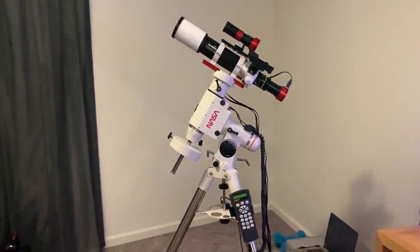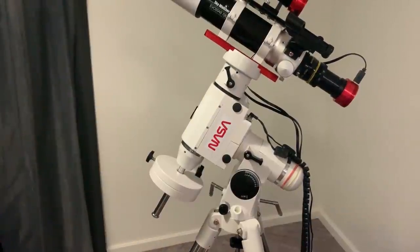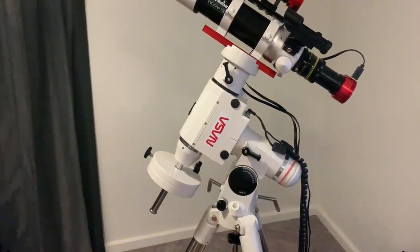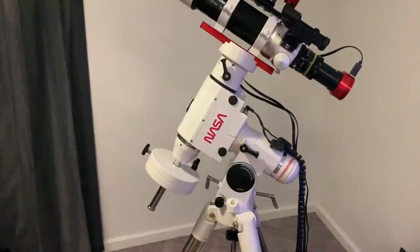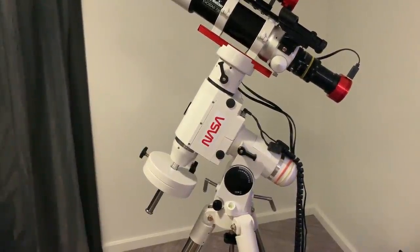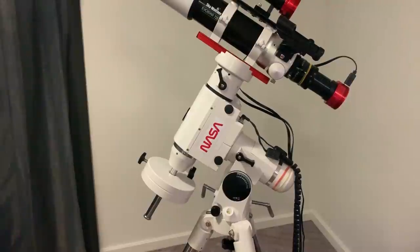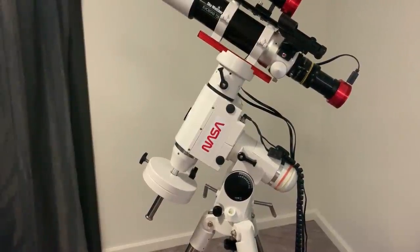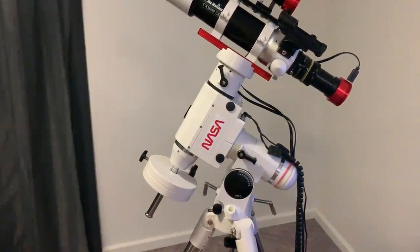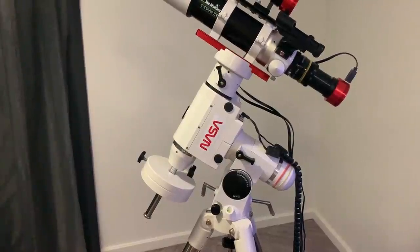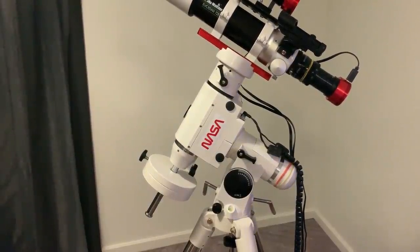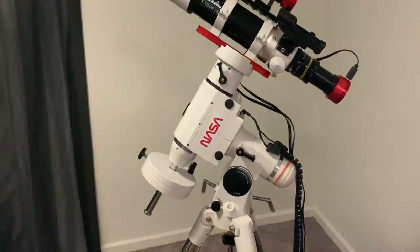Firstly, the mount. So as we know, the purpose of an equatorial mount is to compensate for the rotation of the Earth. And this allows us to take long exposure photographs of stars, galaxies and nebulae. In order to do this, we need to align the mount as accurately as possible with the Earth's rotational axis.